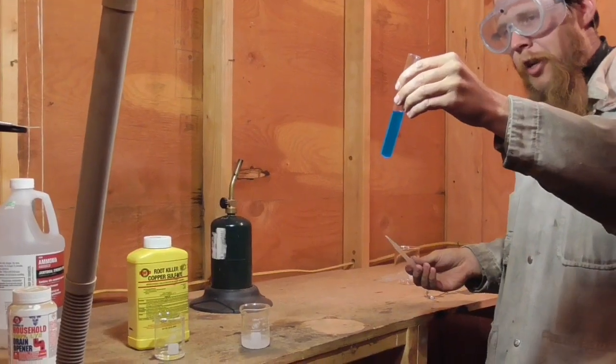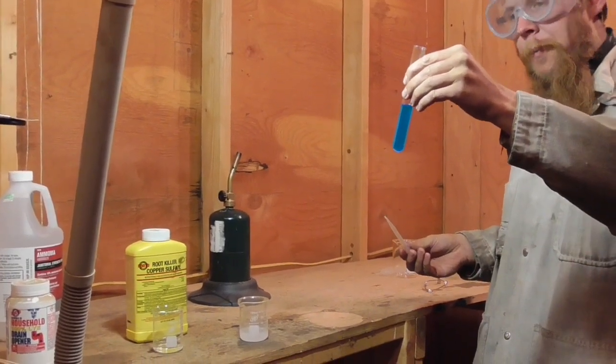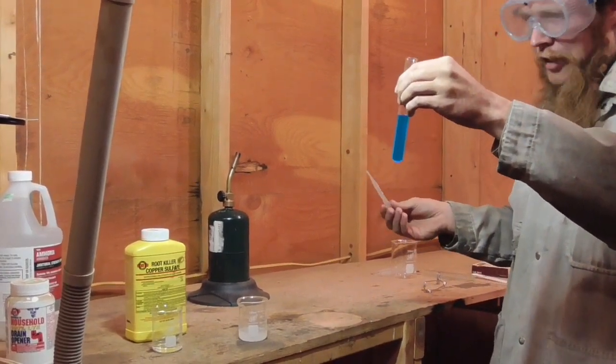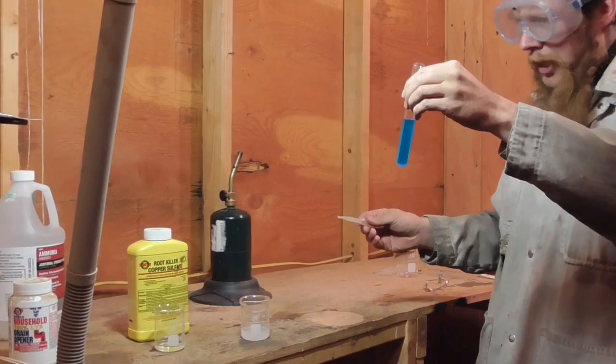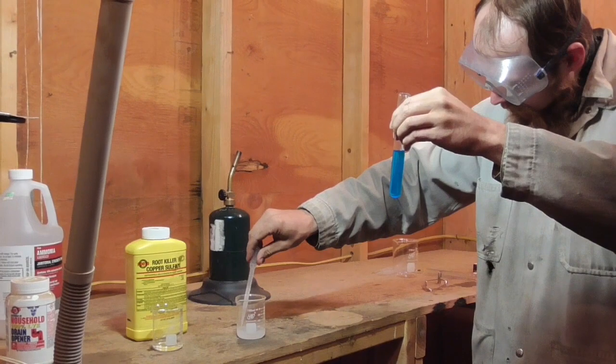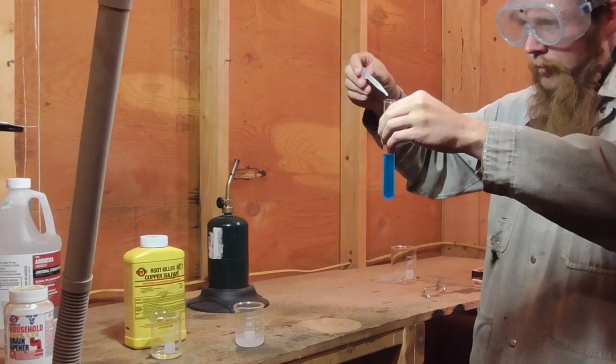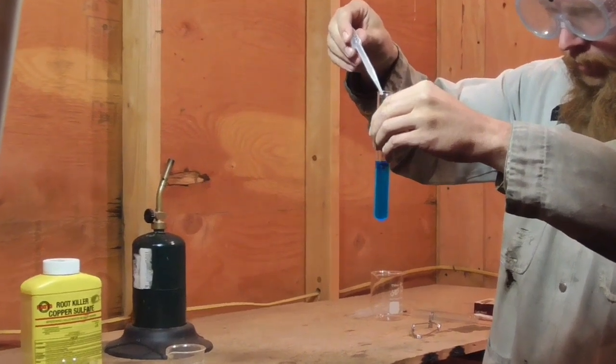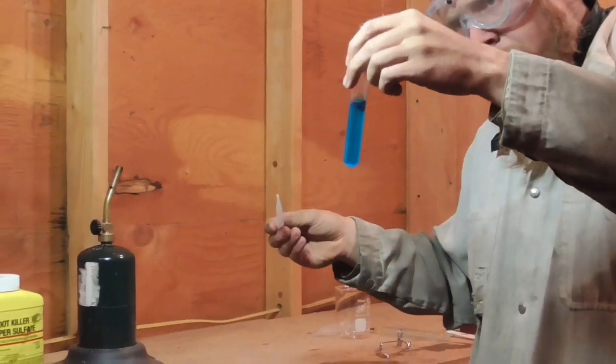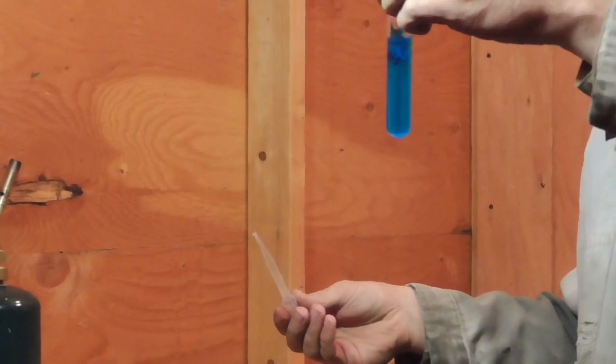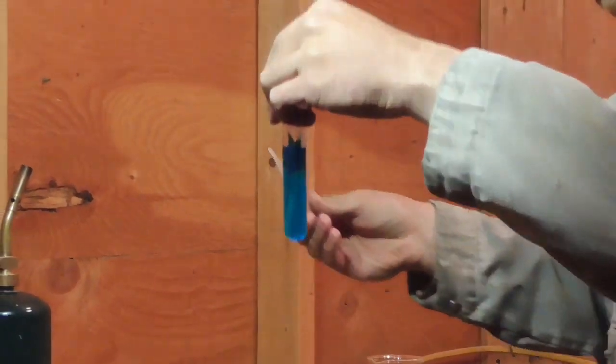So now that we've dissolved all of our cupric sulfate, we have a deep royal blue solution. Let's add a few drops of sodium hydroxide and see what happens. Mix that around a little bit.